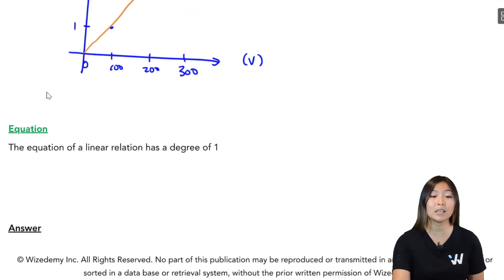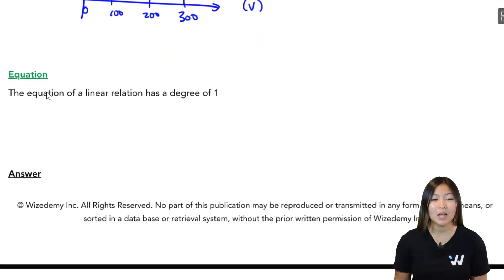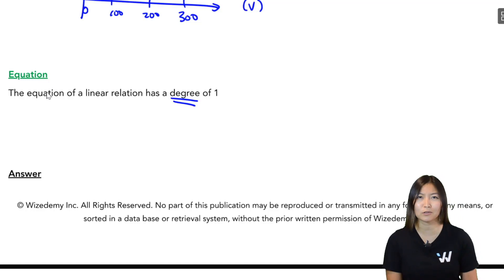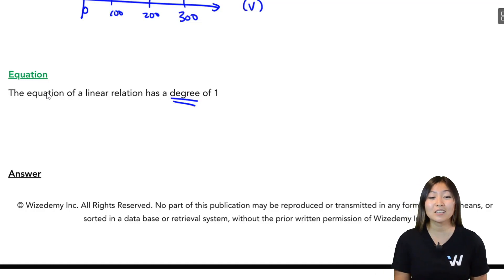Finally, we can look at the equation, which is my favorite. So the equation of a linear relation has a degree of 1. Well, you might be asking, Jess, what is a degree? Are they going to school here? No, not quite. The degree is just the exponent of the independent variable. Okay, so it's the exponent on the independent variable.